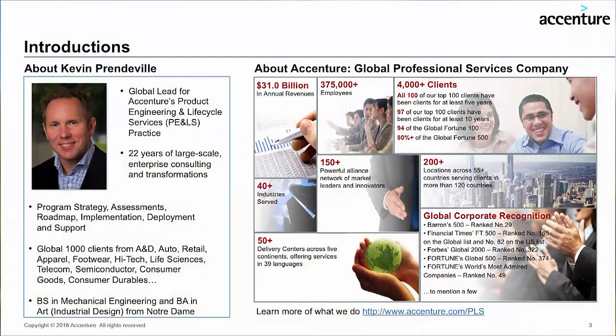Before we get into this, I want to introduce myself a little bit. I'm the global managing partner for Accenture and our product engineering and lifecycle practice. What we do is we help companies with their processes, operations, and technology to get products to market faster — from engineering through manufacturing through after sales. I've been doing that for about 22 years across all kinds of different industries, from retail to apparel to high tech to aerospace, semiconductor, and med products. It's been a blast. And like a lot of you, I'm a mechanical engineer, so I use my problem-solving skills every day at Accenture.